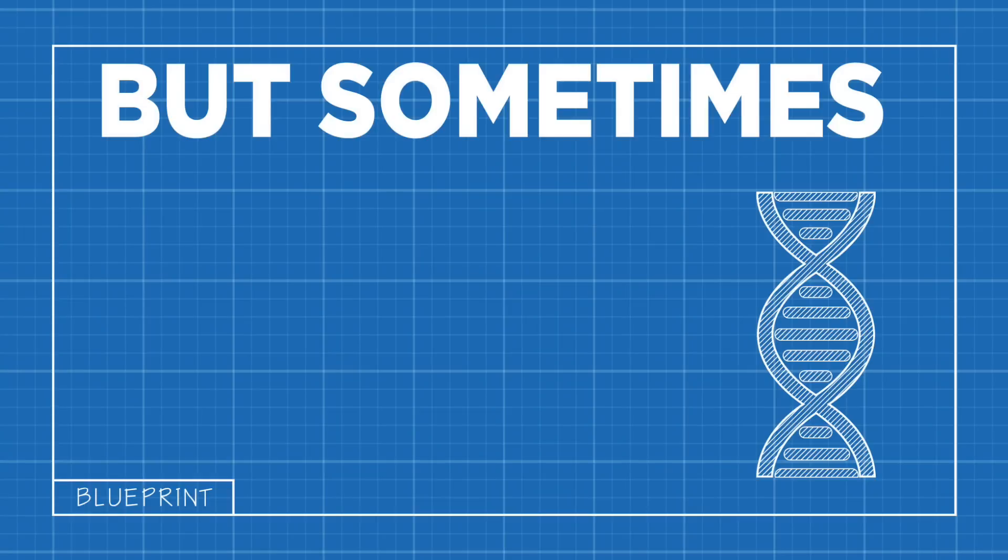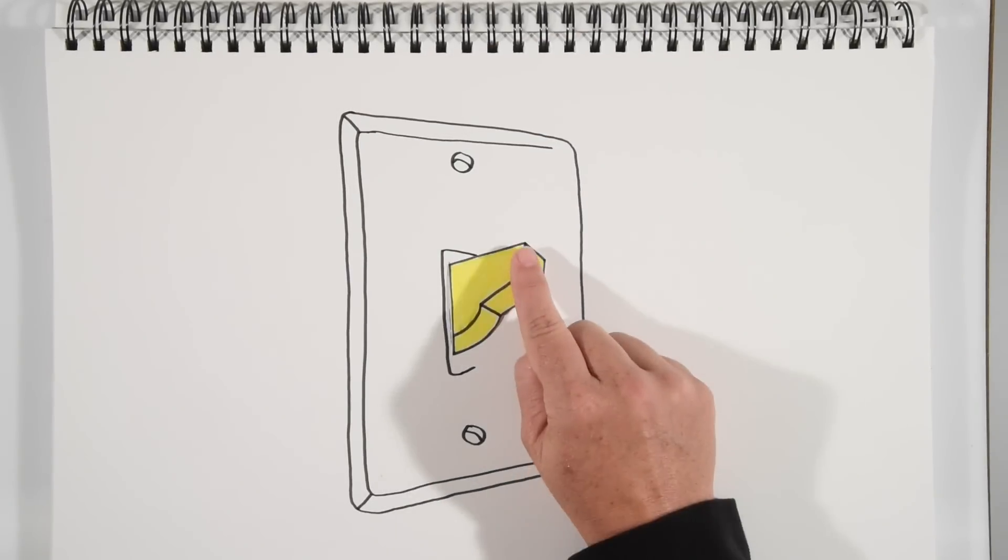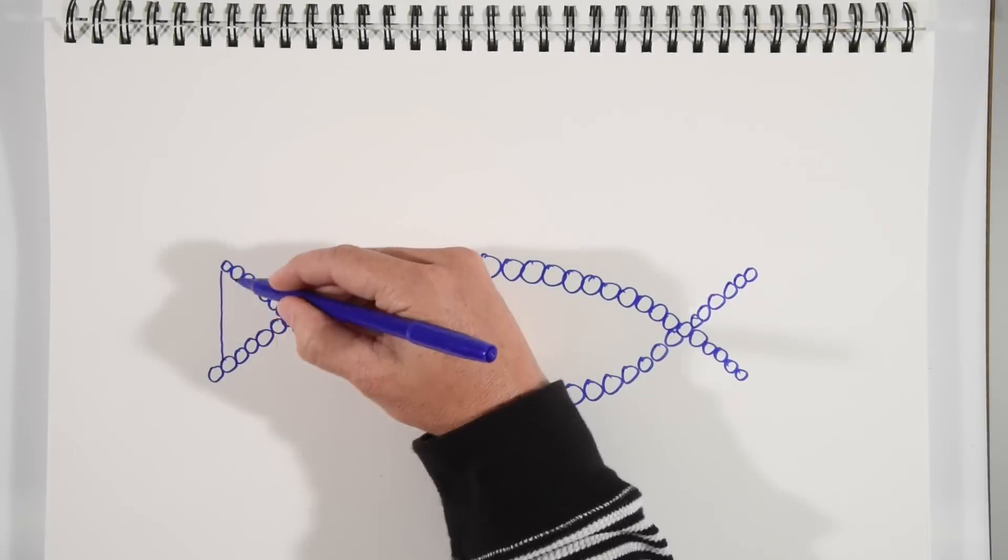But sometimes genes misbehave. Sometimes the wrong gene turns on, or the right gene turns off. Mistakes like this can lead to bad things, like cancer.